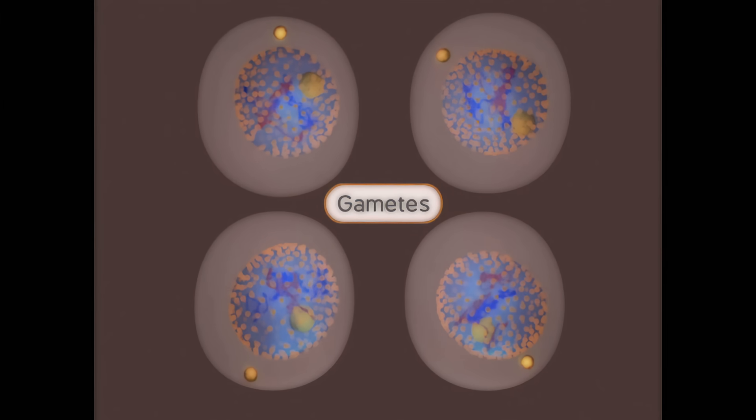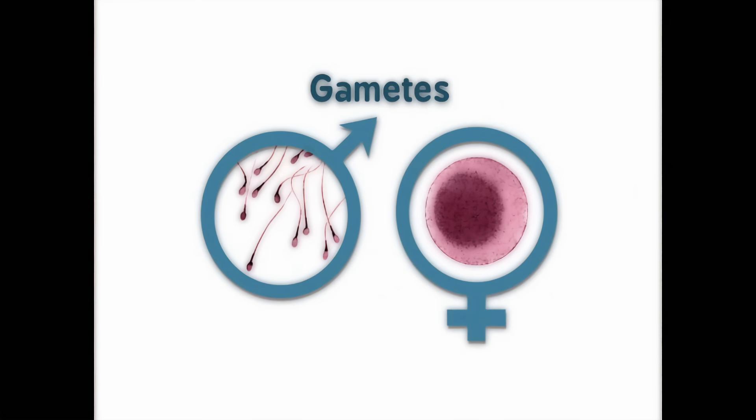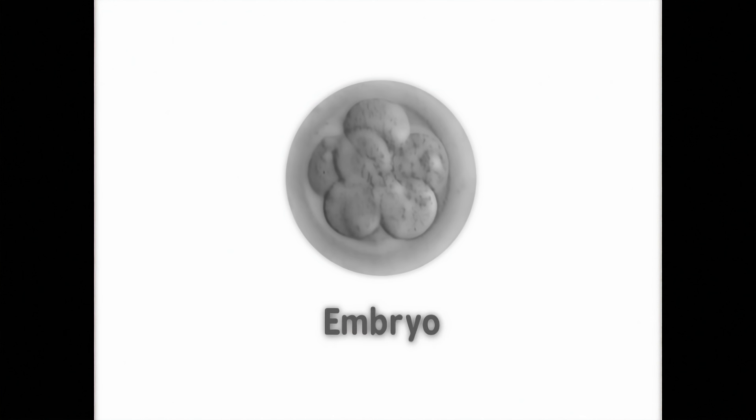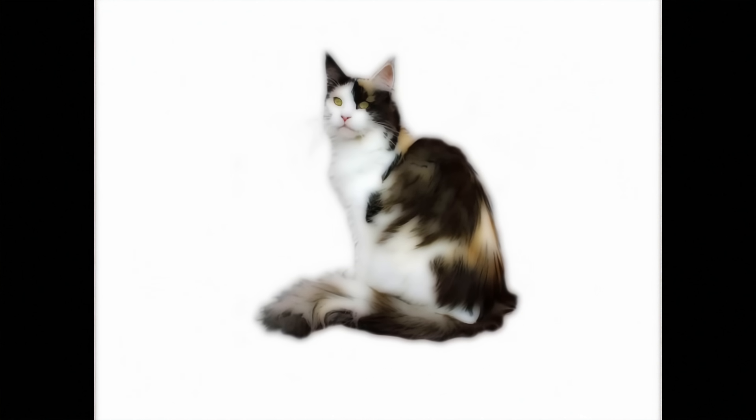These cells are gametes. Two gametes, one from a father and one from a mother, may fuse to produce a diploid embryo. The resulting embryo then grows through many cycles of mitosis.